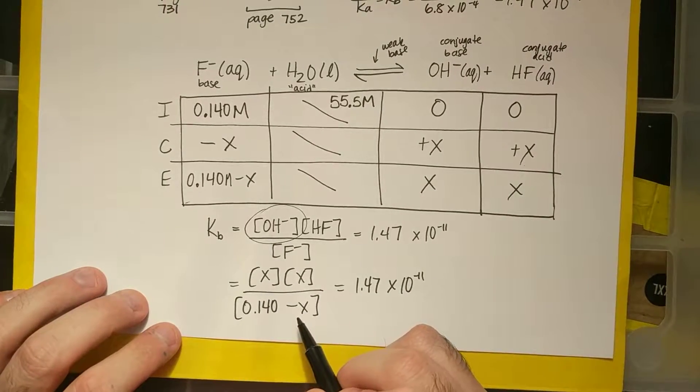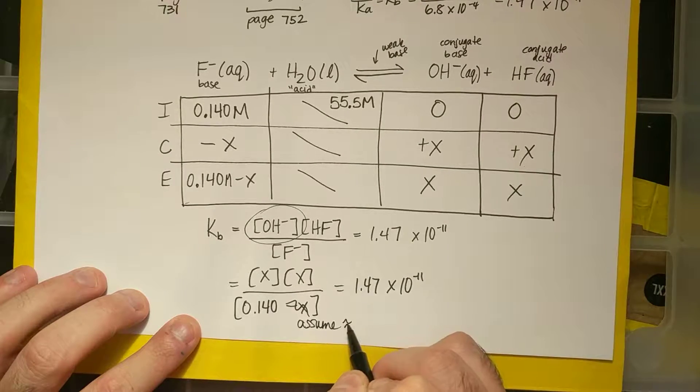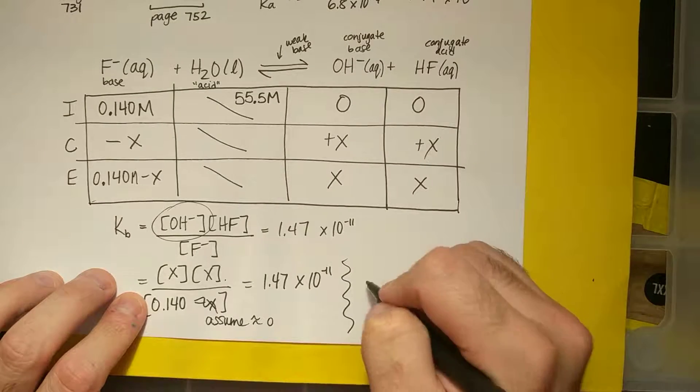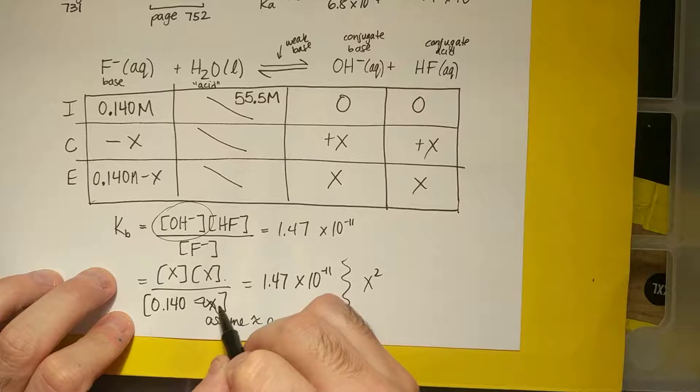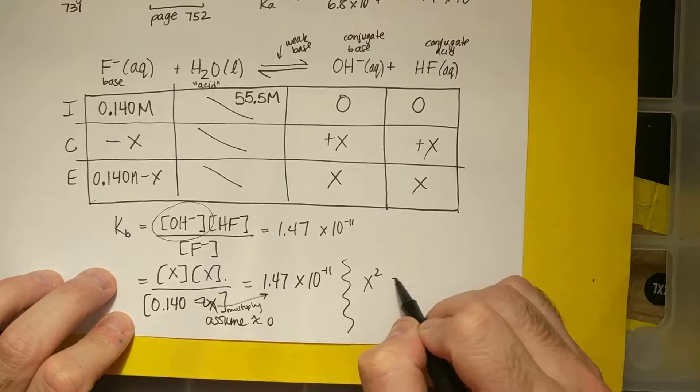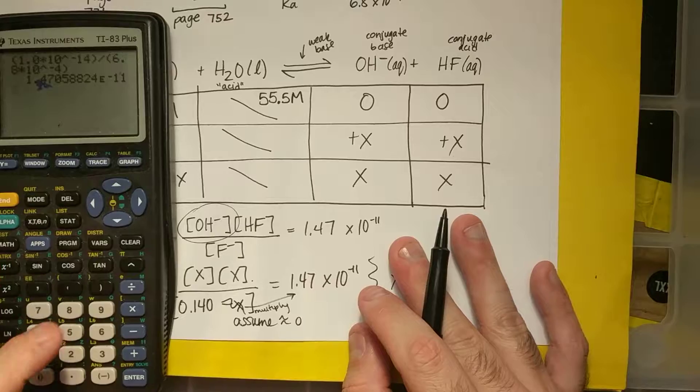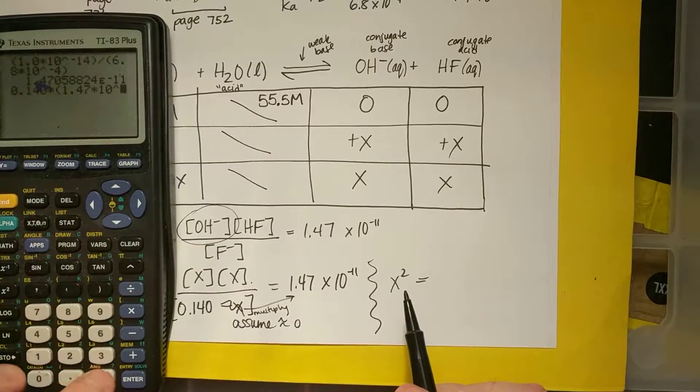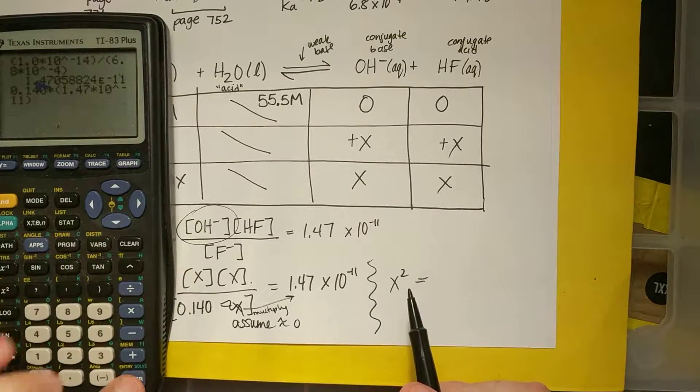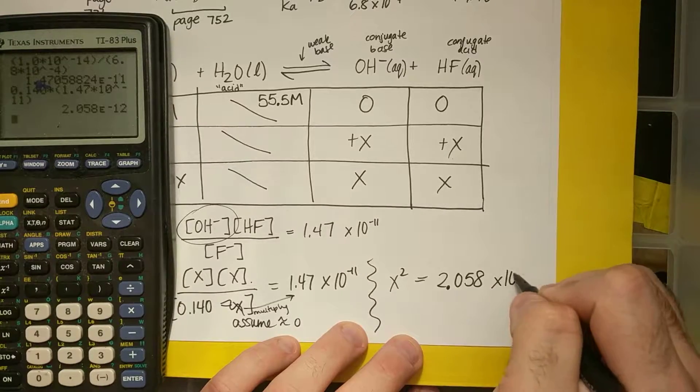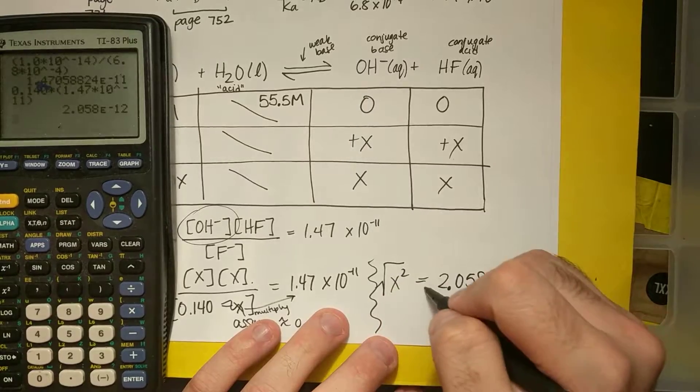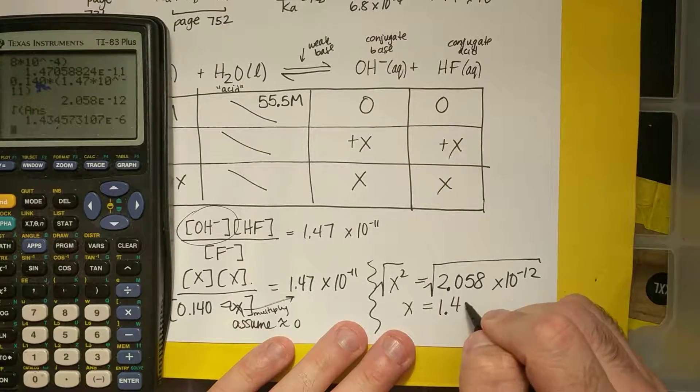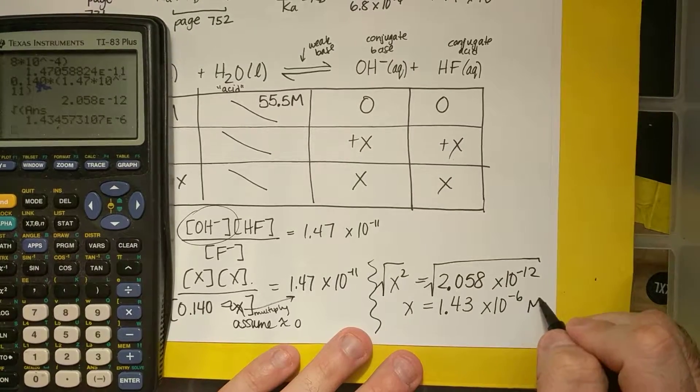X times X over 0.140 minus X equals 1.47 times 10 to the minus 11th. You know well that this X, I could assume it to equal approximately 0, because this K is so freaking small. So now if I want to solve for this, X times X is X squared. And I have to multiply 0.14 times 1.47. I'll get X squared equals 0.140 times 1.47 times 10 raised to the minus 11th, and I get 2.058 times 10 to the minus 12th. If I want to solve for X, square root of both sides. X equals 1.43 times 10 to the minus 6 molar.